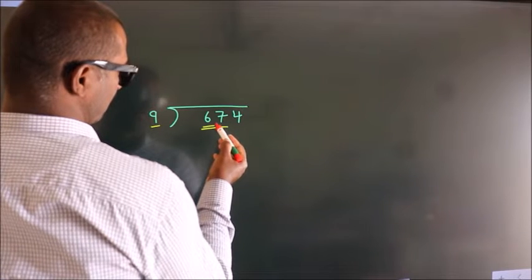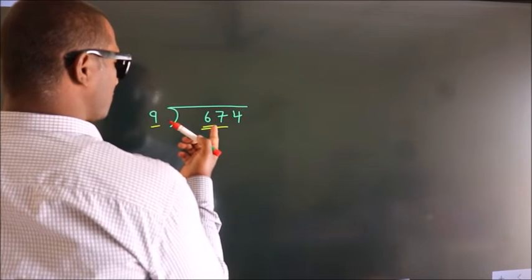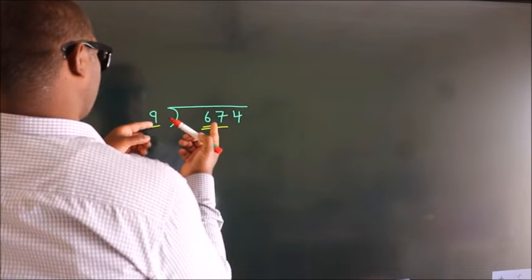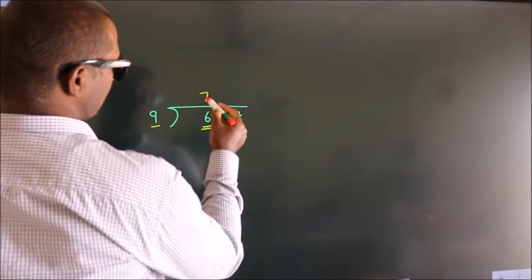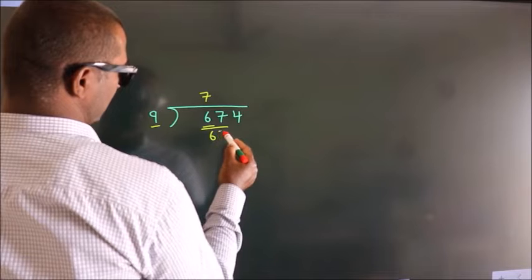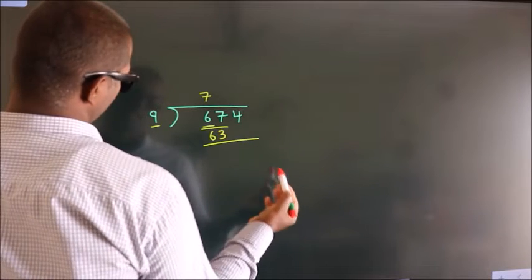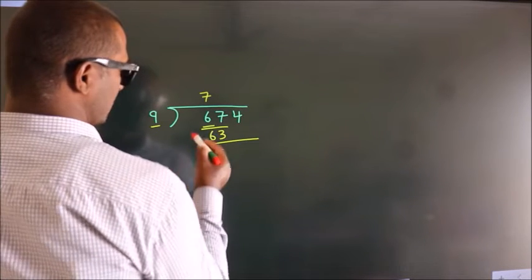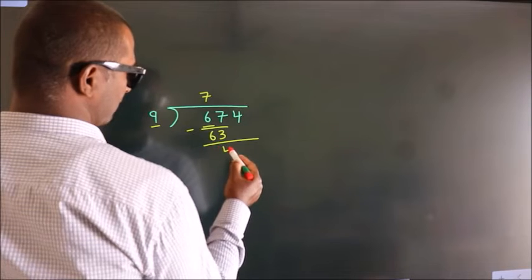67. A number close to 67 in 9 table is 9 7s, 63. Now we should subtract, we get 4.